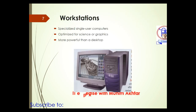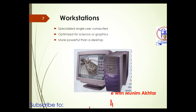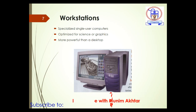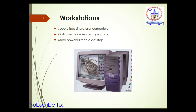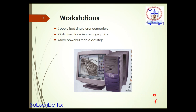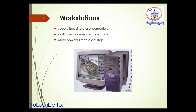Next is the workstation computer. A workstation is just like a single-user computer but more powerful than personal computers like desktops and towers. This system is used for science or graphics work — for example, if you want to use AutoCAD or similar software, you need a more powerful system than a personal computer, because graphics processing requires heavy calculations that personal computers cannot handle.